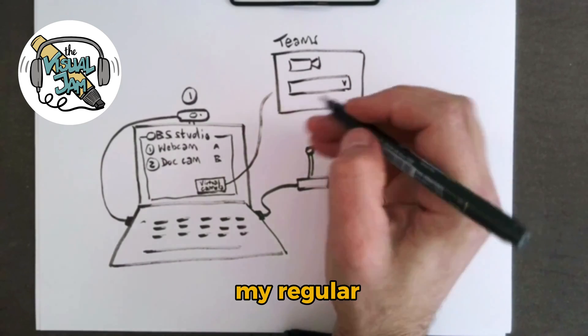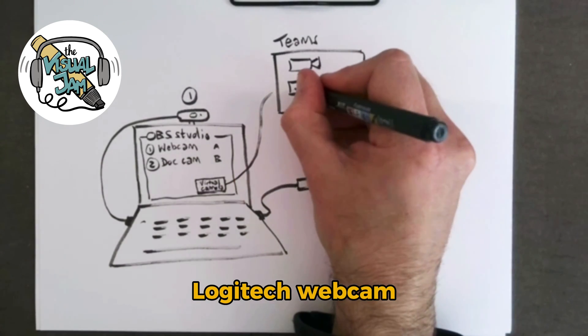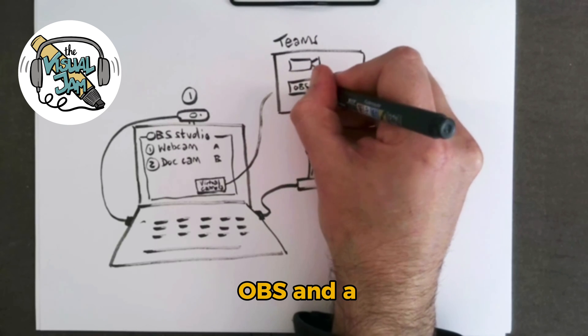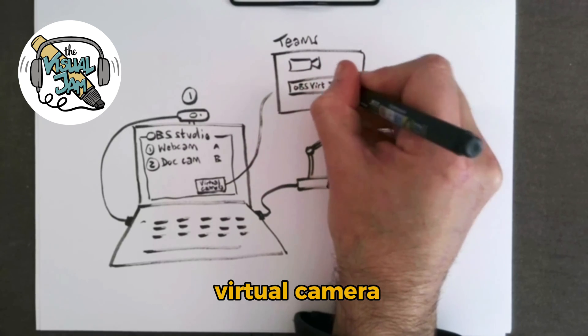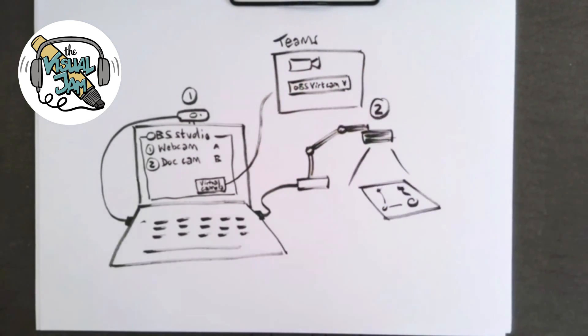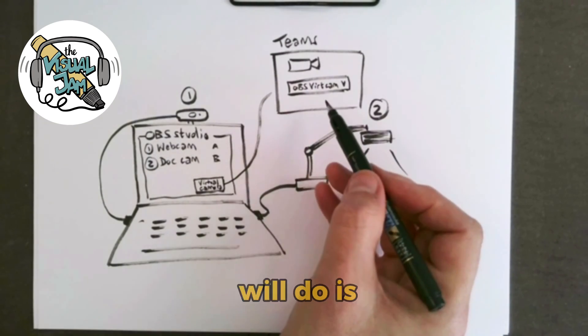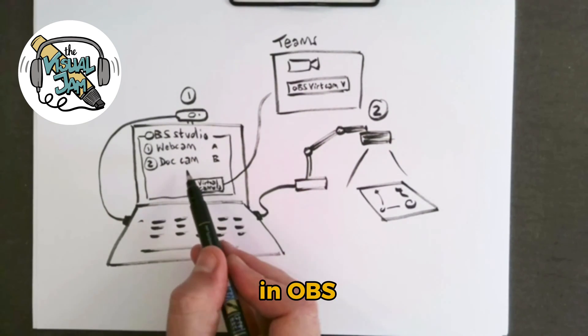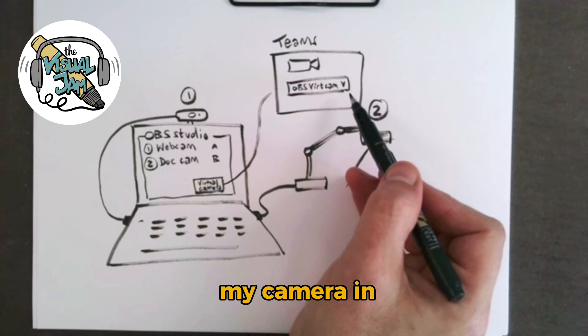All I do in Teams is instead of selecting my regular Logitech webcam, I pick the OBS virtual camera as my option. And what that will do is whatever I'm showing in OBS will show as my camera in Teams.